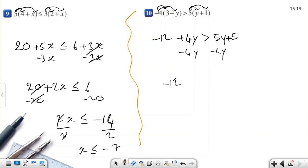Negative 12, that will be 0, is greater than 5y minus 4y. It's only 1y plus 5. Minus 5 minus 5. That will be 0. Negative 17 is greater than y. So if negative 17 is greater than y, I can tell y is less than negative 17.